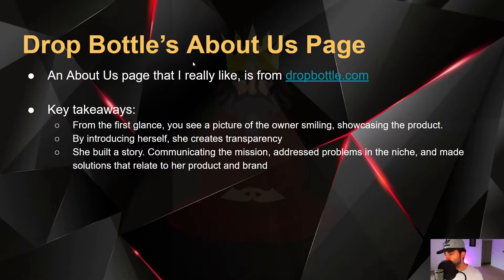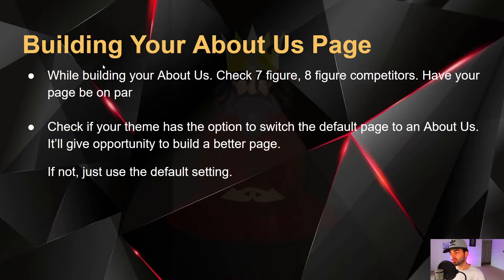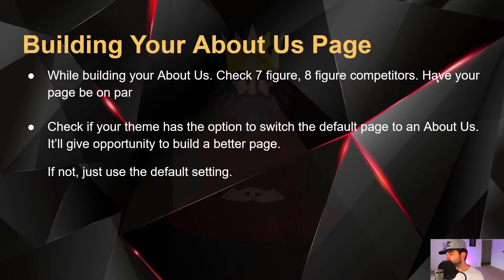All you really have to do with an About Us page is build a story, communicate the mission, address the problems in your niche, and then make solutions that relate back to your product and your brand. While you're building your About Us page, go to a seven or eight figure brand that's your competitor, pick one that has a really good About Us page, and build it out like theirs but in your own terms.